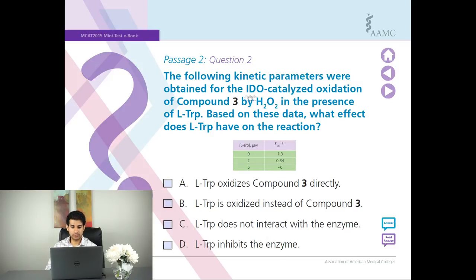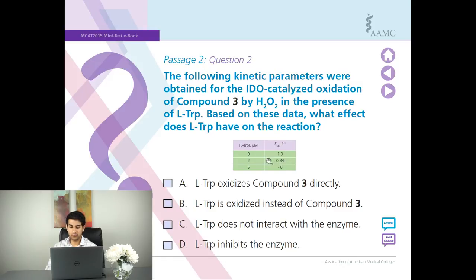Question two: the following kinetic parameters were obtained for the IDO-catalyzed oxidation of compound 3 by H₂O₂ — the oxidation of H₂O₂ in the presence of LTRP. Based on these data, what effect is LTRP? They gave us data here on LTRP. This is concentration — you can tell by the units — and this is basically a rate, which you can also tell by the units. The rate is decreasing as the concentration increases.